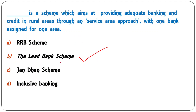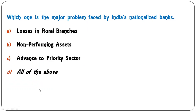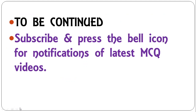Which is the major problem faced by India's nationalized banks? Options are losses in rural branches, non-performing assets, advances to priority sector, or all of the above. The correct answer is D — all of the above are problems faced by nationalized banks: NPAs, losses in rural branches, and loans given to the priority sector such as agriculture and the small sector. All the best, good luck!